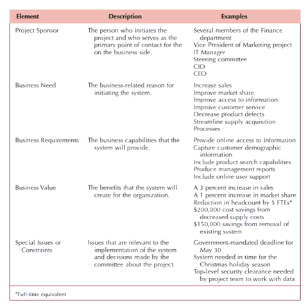The final section of the system request covers special issues or constraints — things that should be considered or might be relevant to the stakeholders or to the outcome of the system.